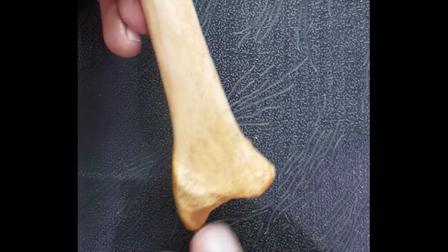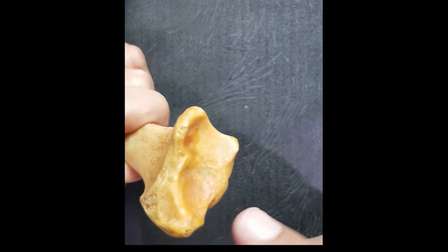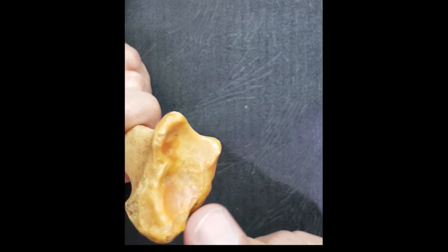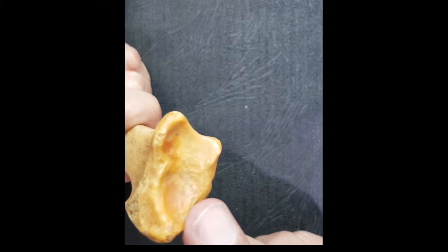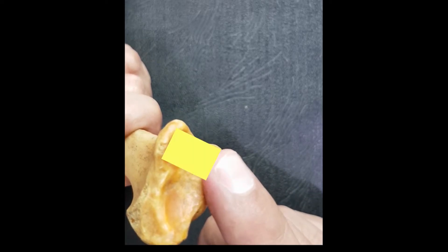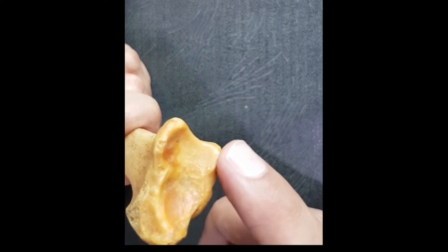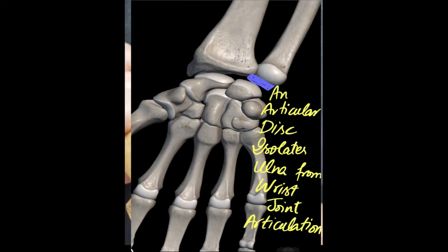The lateral aspect of the radius bone lower end is projected downward to form the styloid process. The inferior aspect of the radius bone has got two impressions: one triangular impression towards the lateral side is for articulation with the scaphoid bone, and one square-shaped impression towards the medial side is for articulation with the lunate bone. So the scaphoid and lunate bones articulate with the radius bone to form the wrist joint. There is no participation of the ulna in the wrist joint.